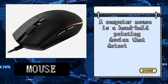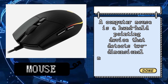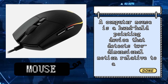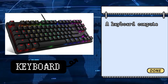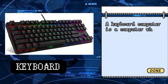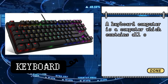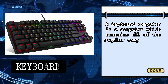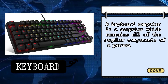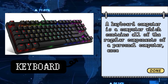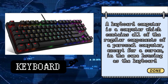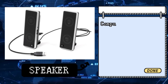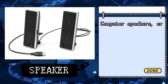A computer mouse is a handheld pointing device that detects two-dimensional motion relative to a surface. A keyboard computer is a computer which contains all of the regular components of a personal computer except for a screen, in the same housing as the keyboard.